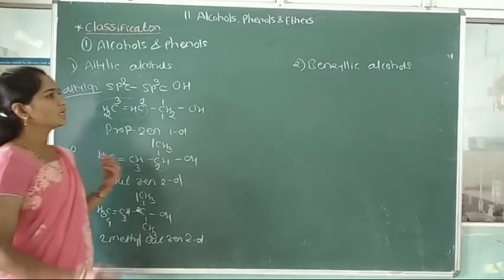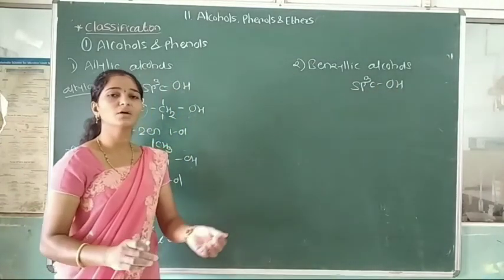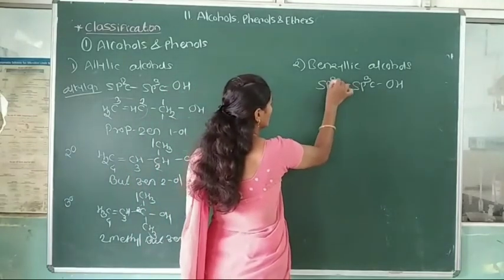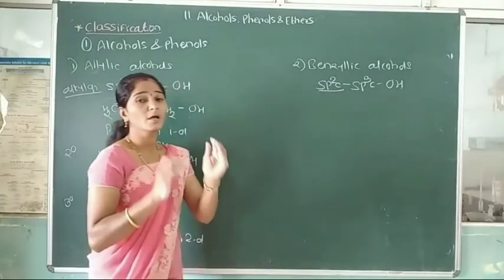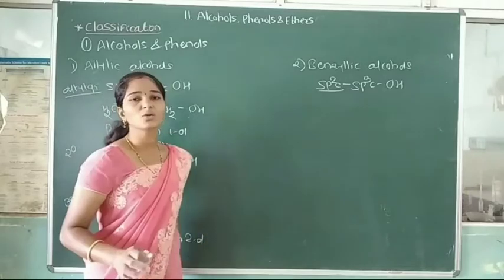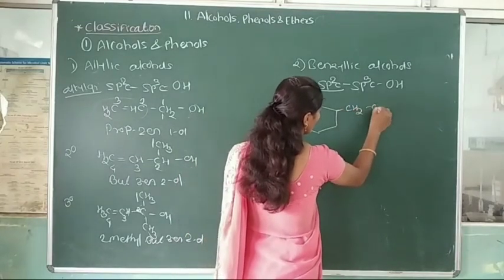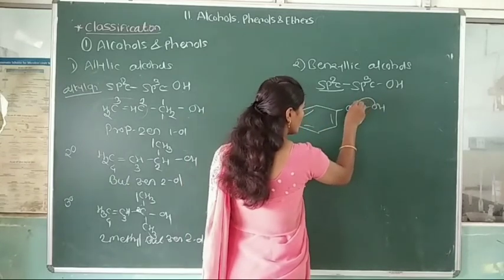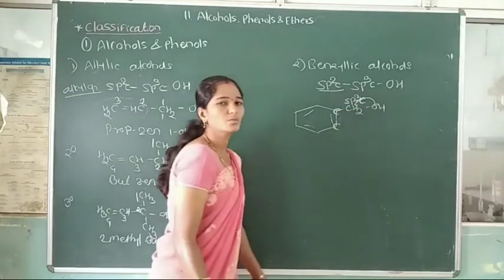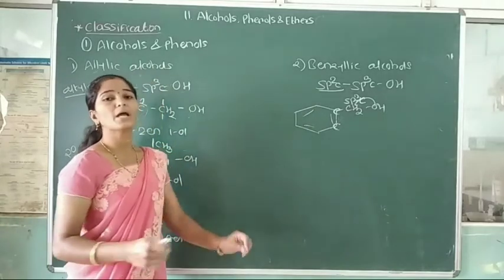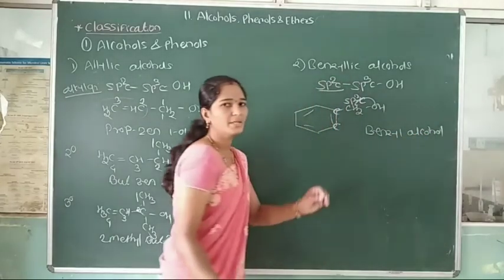Next, benzylic alcohol. The OH-carrying sp3 carbon is further bonded to an sp2 carbon atom, but this sp2 carbon is in a benzene ring. These are called benzylic alcohols, which can also be primary, secondary, and tertiary. For example, benzene ring–CH2–OH is a primary benzylic alcohol — called benzyl alcohol.